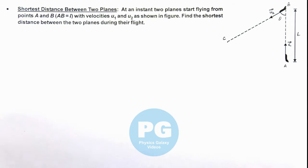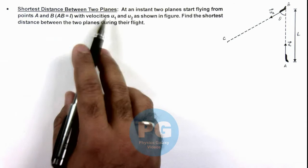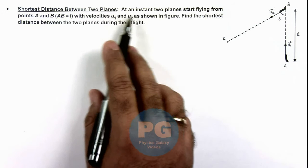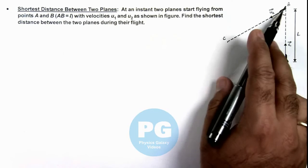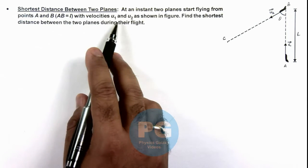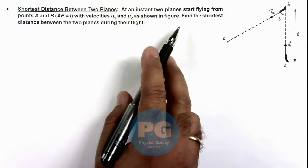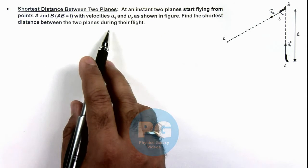In this illustration, we'll study about the calculation of shortest distance between two planes. Here in the situation we are given that at an instant two planes start flying from points A and B, where AB is equal to L, with velocities u1 and u2 as we can see here in the figure. And we are required to find the shortest distance between the two planes during their flight.